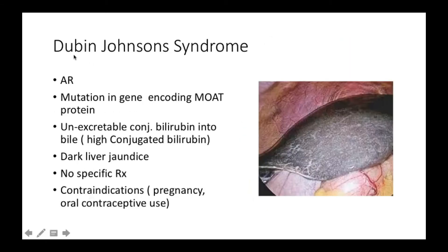Now let's move on to Dubin-Johnson syndrome. Dubin-Johnson syndrome is autosomal recessive, and here there's a mutation in the gene that codes for the MOAT protein. You have to remember that in Dubin-Johnson syndrome, it falls under high levels of conjugated bilirubin. What happens here is that there is unexcretable conjugated bilirubin into bile, and therefore the patient presents with high conjugated bilirubin levels. On gross appearance of the liver, you see a dark liver — jaundice.